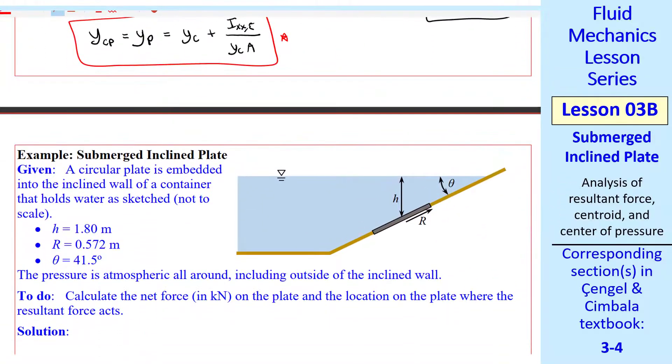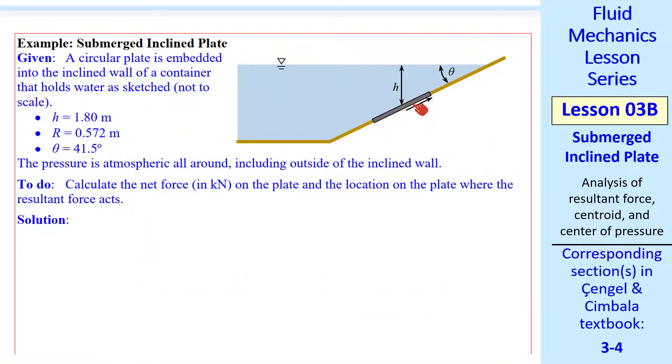Now we're ready to do an example problem. Suppose we have a circular plate embedded into the wall of some kind of container. We give the depth here H. The radius of the circle R and theta is 41.5 degrees. Pressure is atmospheric all around. Even under this plate, it's a container. So we can ignore P naught and use gauge pressure for convenience. We want to calculate the net force on the plate and the location where this resultant force acts.